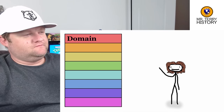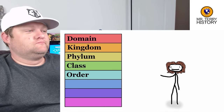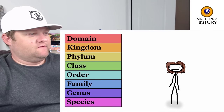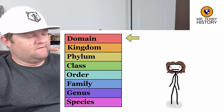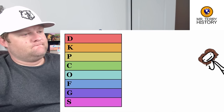First, you got the big eight: domain, kingdom, phylum, class, order, family, genus, species. I've seen plenty of mnemonic devices for this, but since the domain just showed up in the 90s and is still disputed by some scientists, it's usually not included.